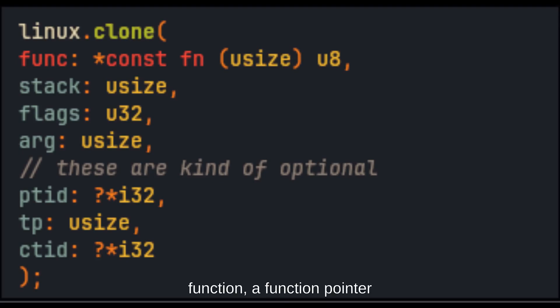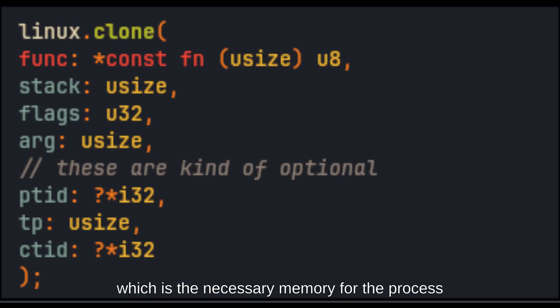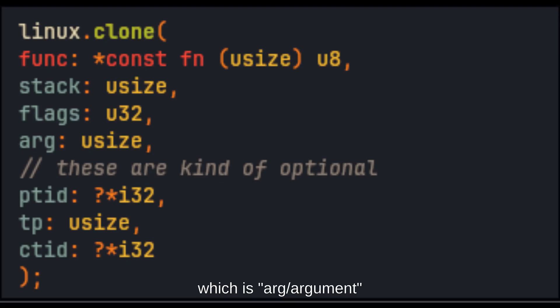In the clone syscall there are three main arguments: a function pointer — this is the process that will be executed; the stack — a pointer to the memory necessary for the process; and the flags — the resources allowed to be shared. There's actually a fourth argument which is a pointer to the arguments, which is kind of optional.